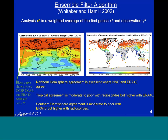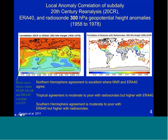Here I'm showing the local anomaly correlation between the sub-daily 20th-century reanalysis and ERA-40 on the left panel, and between the 20th-century reanalysis and radiosonde data in the right panel. This is all at 300 hPa geopotential height for the period 1958 to 1978. ERA-40, being another reanalysis that uses upper air data, is continuous over this period, whereas the radiosondes are discontinuous. The thick black curve indicates where NCEP-NCAR reanalysis and ERA-40 correlate higher than 0.975.